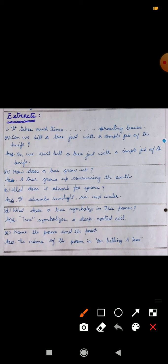So first extract is: It takes much time to kill a tree, not a simple jab of the knife will do it. It has grown slowly consuming the earth, rising out of it, feeding upon its crust, absorbing years of sunlight, air, water and out of its leprous hide, sprouting leaves. Means, we have taken first para of your poetry. So the first question is, Can we kill a tree just with a simple jab of the knife? The answer is no. No, we can't kill a tree just with a simple jab of the knife.